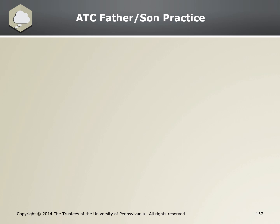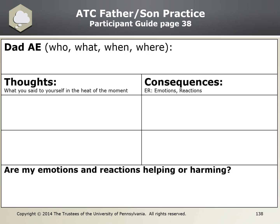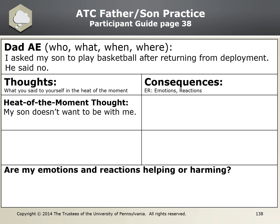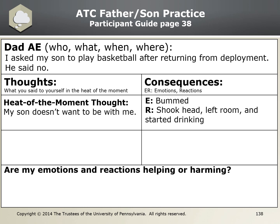Let's break down the ATC for the father. There were a number of possible activating events in the clip, but we're only going to focus on one. In real life, there are often multiple AEs in a given situation, but part of the skill of ATC is being able to freeze-frame one moment at a time to catch our thoughts and consequences. The AE we're using: I asked my son to play basketball after returning from deployment — he said no. Remember, the AE is just the facts — who, what, when, where. His heat-of-the-moment thought is: 'My son doesn't want to be with me.' The ER: he feels bummed; his reaction is he shook his head, left the room, and started drinking.